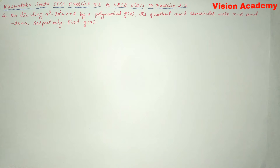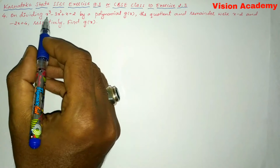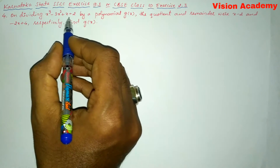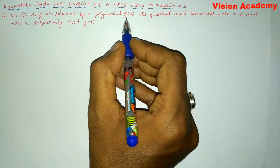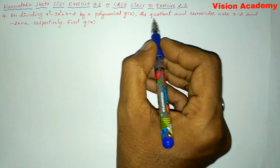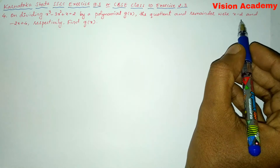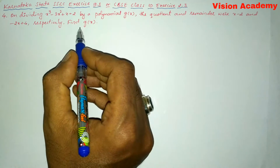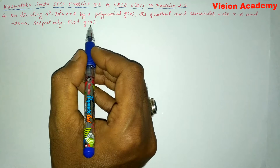In this video we are going to solve Karnataka state SSLC exercise 9.3 or CBSE class 10 exercise 2.3, question number 4. On dividing x³ minus 3x² plus x plus 2 by a polynomial g(x), the quotient and remainder were x minus 2 and minus 2x plus 4 respectively. Find g(x).